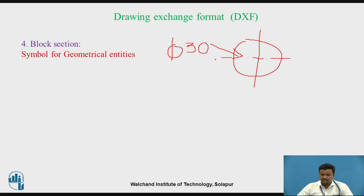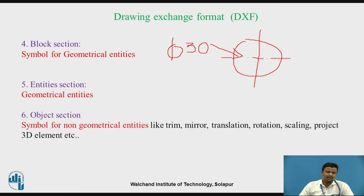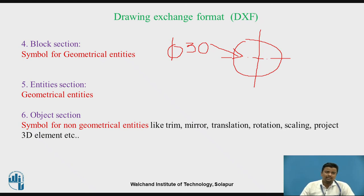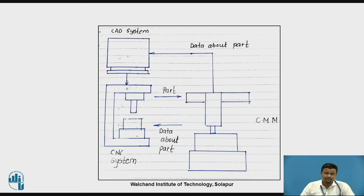The Entity section covers geometrical entities. The Object section provides symbols for non-geometrical entities — for example, operations like trim, mirror, translation, rotation, and scaling. These are geometrical transformations, including projected 3D elements. All these contents are provided in the Object section.